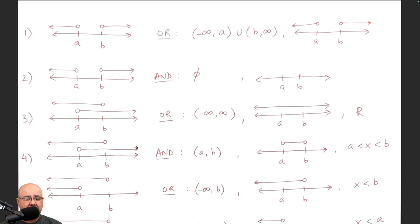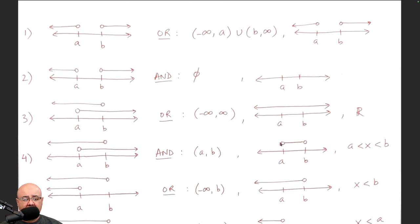If we have the same exact graph but instead we have an AND problem, now we ask where is the sandwich — where is the overlap? There's an overlap between A and B. So the graph of that would be just the solutions from A to B; only this portion needs to be graphed, so this would be the final answer. This is just the intermediate step. Because this portion is graphed between A and B, the interval is just A to B. And if one of these were closed, then you would just use brackets instead of parentheses.